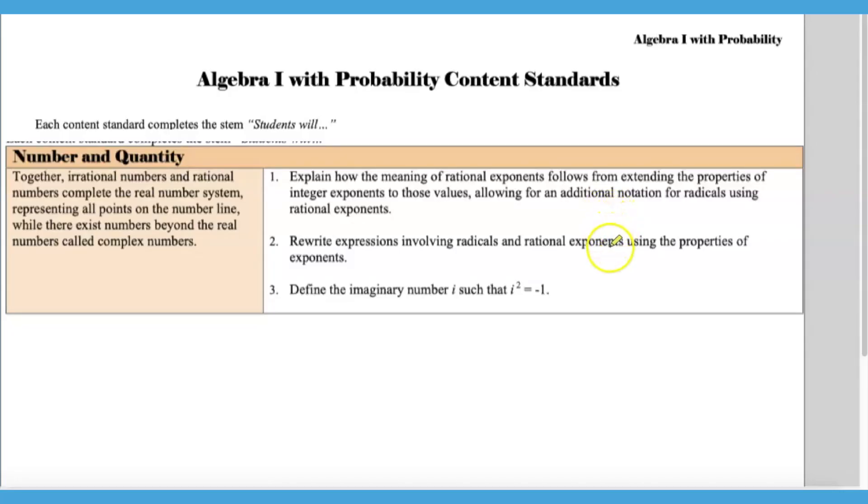Hi, my name is Wes Everton and today we're going to talk about a new standard for the Alabama Algebra One with Probability course. This standard is standard number three: students will define the imaginary number i such that i squared equals negative one. This is the only place in algebra one where we see the imaginary number.